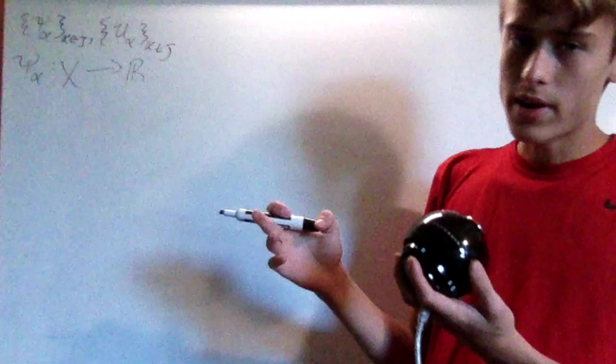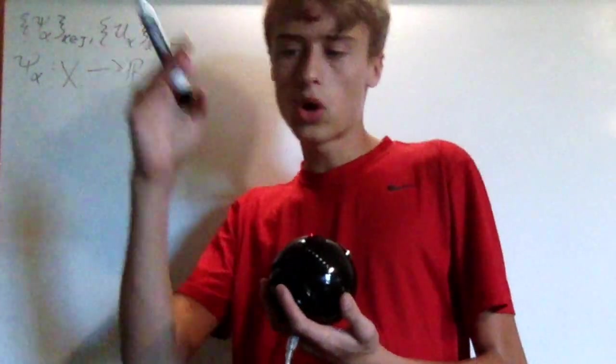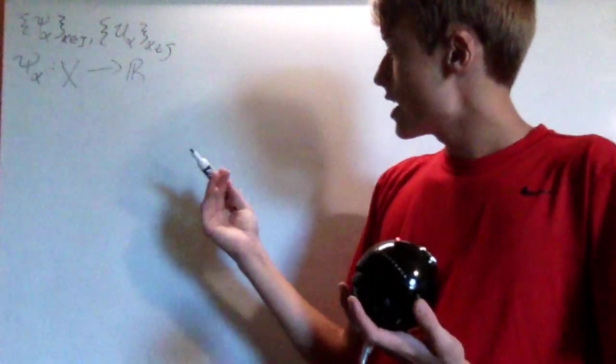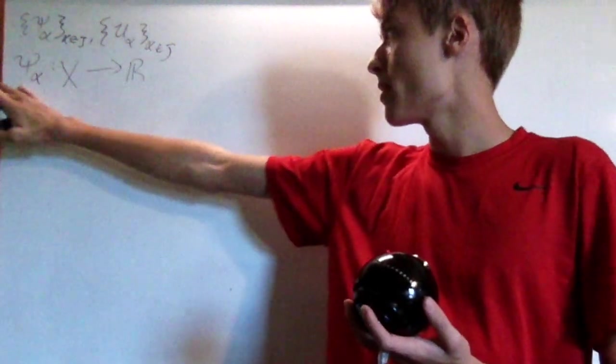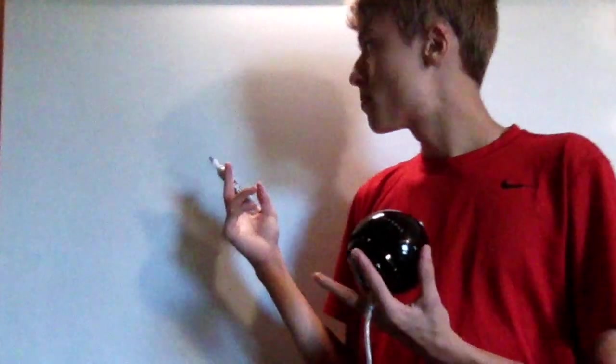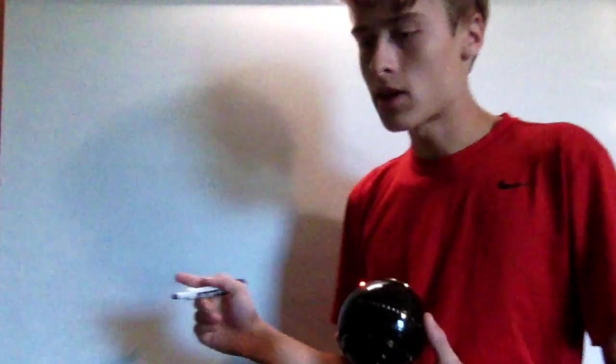It still has the property that it's between zero and one, that the sums all go to one. It's just that it's now a continuous map and not a smooth one. And so that's the partition of unity on a general topological space.